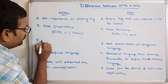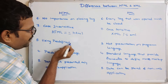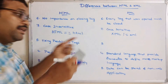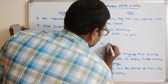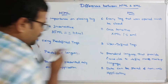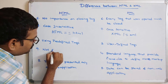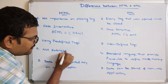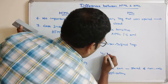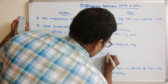HTML uses predefined tags, whereas XML uses user-defined tags — tags defined by the user or author themselves. Because HTML uses predefined tags it is not extensible, but XML is extensible because all tags are written by the author.